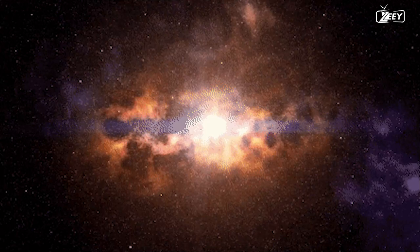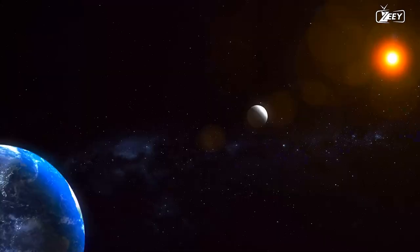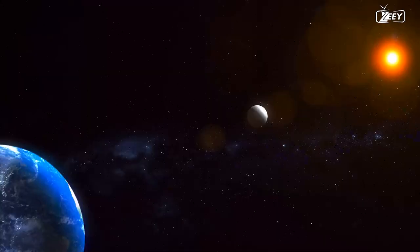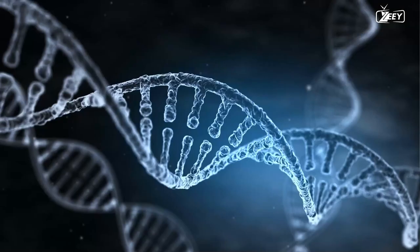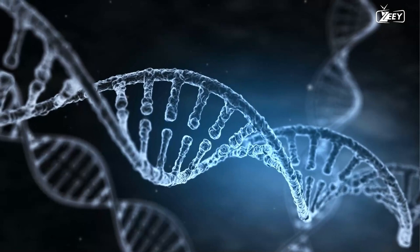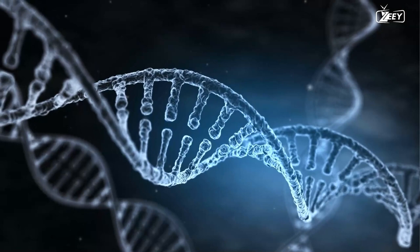If Earth were to survive the initial supernova detonation, it would be subjected to extreme temperatures and radiation, which would strip away a significant portion of its atmosphere and likely sterilize the planet. In addition to causing genetic mutations and damage to living organisms, the intense radiation would make it exceedingly difficult for life to survive.